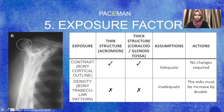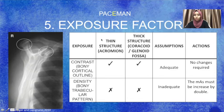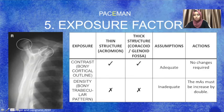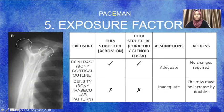For exposure factors, for the thin structure we use the acromion, and for the thick structure we use the coracoid. The kVp used for penetration and radiographic contrast is adequate because the bone cortical outline of both the thin structure (acromion) and the thick structure (coracoid) can be seen. However, the mAs used for detail and density is inadequate because the bony trabecular pattern of both the acromion and the coracoid cannot be seen. The action needed is to increase the mAs by double.